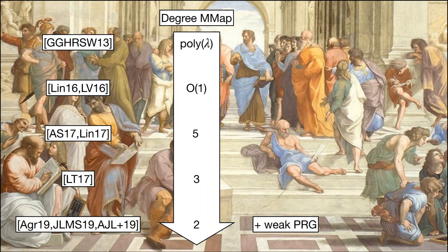Let me give a brief historical note about obfuscation. The first cryptographic candidate was proposed by Garg et al. in 2013, and it relied on a new object called cryptographic multilinear maps. You should think of multilinear maps as a standard bilinear map, except that it offers more degrees of multilinearity — you can do more than one multiplication in the exponent. Of course, we want a hard problem associated with this cryptographic structure. After this original work, there was a huge effort, starting with the work of Lin in 2016, to reduce the degree of multilinearity needed to construct obfuscation.